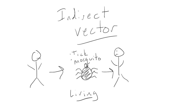A vector is a living organism that can transfer a disease. For example, mosquitoes and ticks are among the most common vectors that transmit infectious disease. A mosquito may bite a person with infectious disease, become infected, then transfer the infection to another person.